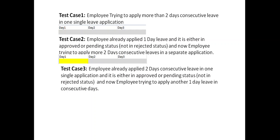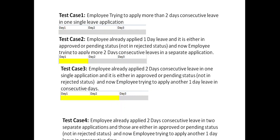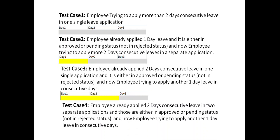Test case three: employee already applied two days consecutive leave in one single application and it is either in approved or pending status — not in rejected status. Now employee is trying to apply another one day leave on a consecutive day. So two days is already applied and now employee is trying to apply the third day in a separate application, making it more than two consecutive days. As per requirement, the system should restrict that.